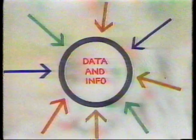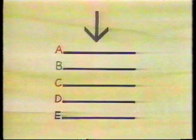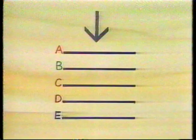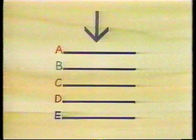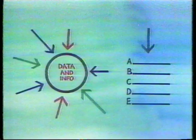Essentially, a database management program files data and information in such a way as to allow access from many different directions. A word processor application program, on the other hand, stores data sequentially, usually allowing access in only one direction. But suppose you wanted to merge a mailing list and a form letter — you could get another software package that would allow that merger to take place.